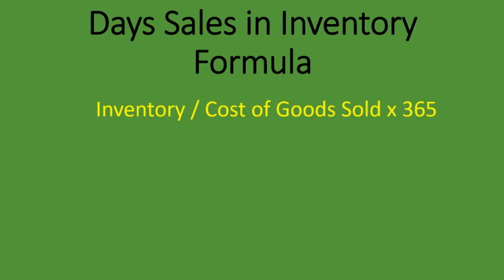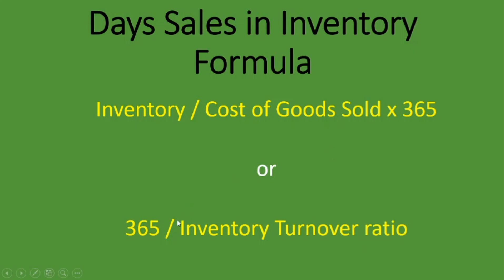Another way to calculate day sales in inventory is by taking 365 days (or 360, depending on the period given) divided by the inventory turnover ratio — you'll get the exact same answer. For example, if you're given an inventory turnover ratio of 11.66 and 365 days, just divide 365 by 11.66 to get your day sales in inventory. If you're not given the turnover ratio, use the standard formula above.